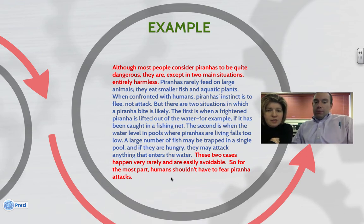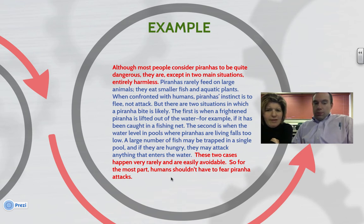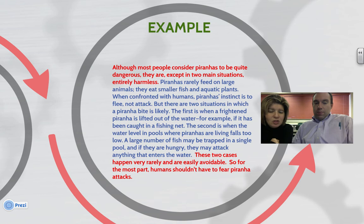The topic sentence reads: 'Although most people consider piranhas to be quite dangerous, they are, except in two main situations, entirely harmless.' So now I expect this paragraph to be about piranhas — telling me when they're dangerous in two situations but how they're otherwise harmless. Piranhas rarely feed on large animals; they eat smaller fish and aquatic plants. When confronted with humans, piranhas' instinct is to flee, not attack.